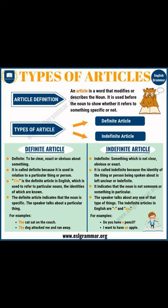Definite means to be clear, exact, or obvious about something. It is called definite because it is used in relation to a particular thing or person. "The" is the definite article in English. The definite article indicates that the noun is specific. For example: "The dog sat on the couch."